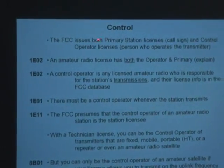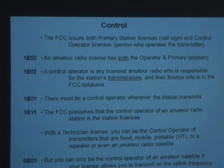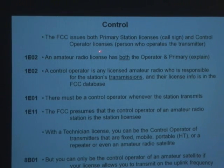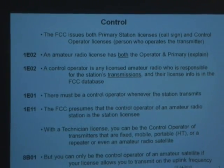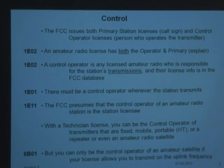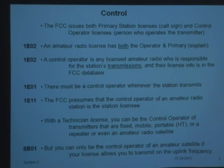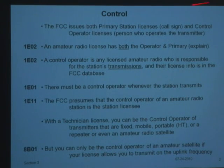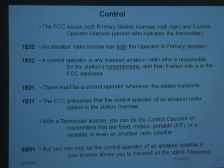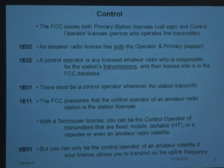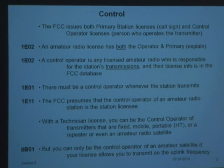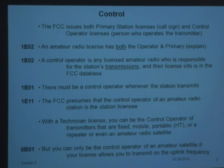The FCC issues what's called both a primary license — that's the call sign you have, like A1DFO, that's my primary — and a control operator license, which is the person who actually can push the button on the transmitter. For example, if you're Ted Turner and you want to have a television station, the FCC gives you a call sign like WABC, but Mr. Turner is not allowed to turn the transmitter on himself. He has to hire somebody who has a different kind of license. In amateur radio, we have a license that gives us a call sign and we're allowed to push the transmitter button.